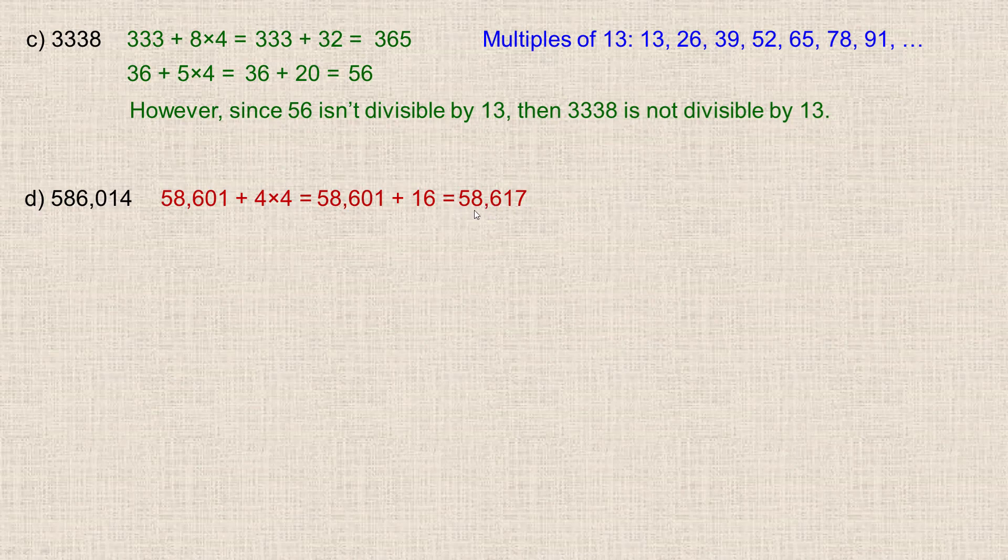So it's still probably too big to realize it's a multiple of 13 or not. So we would take the 5861, and add to it 4 times the 7, which is 28. So 5861 plus 28, see 60 and 20 is 80, and 1 and 8 on the end adds to 9. So we've got 5,889, so probably still too big to know it's divisible by 13.